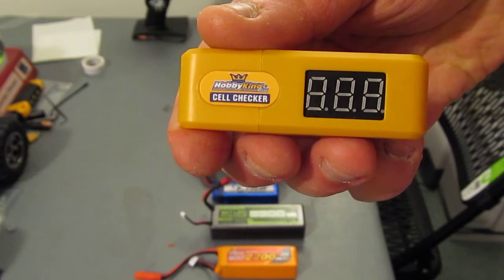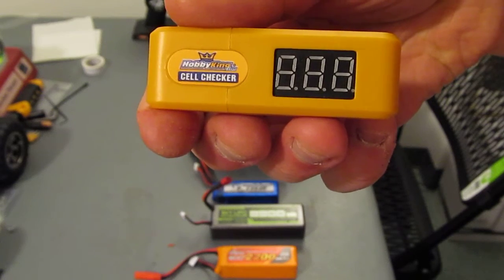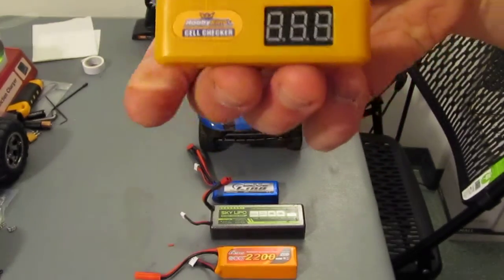All right, this is my new Hobby King cell checker. Picked this up on their website for, it must have not been more than five bucks, probably three to four dollars. So let's see how this works.